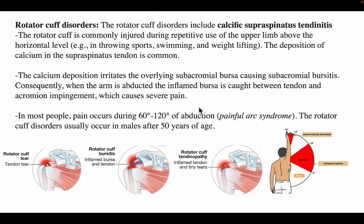Rotator cuff disorders include calcific supraspinatus tendinitis. The rotator cuff muscles are commonly injured during repetitive use of the upper limb above the horizontal level, as in throwing sports, swimming, and weight lifting. Calcium deposition in the supraspinatus tendon is common, which irritates the overlying subacromial bursa causing subacromial bursitis. When the arm is abducted, the inflamed bursa is caught between the tendons and the acromial arch causing severe pain. Pain typically occurs between 60 to 120 degrees of abduction — known as painful arc syndrome. Rotator cuff disorders usually occur in males after 50 years of age.